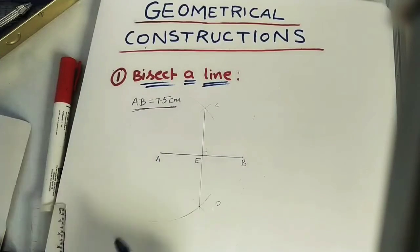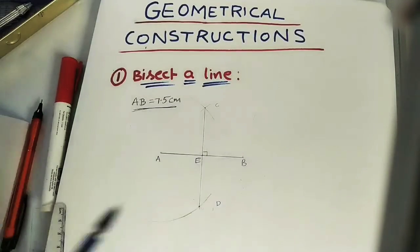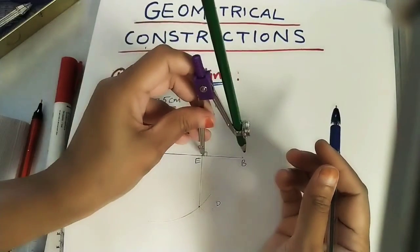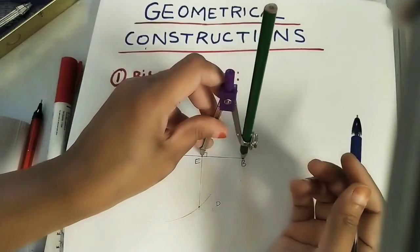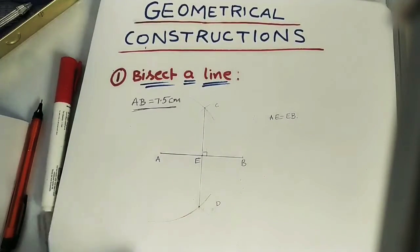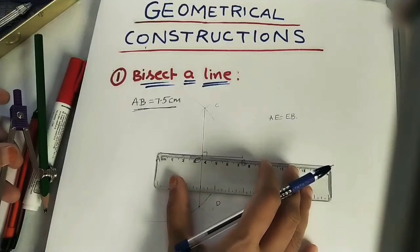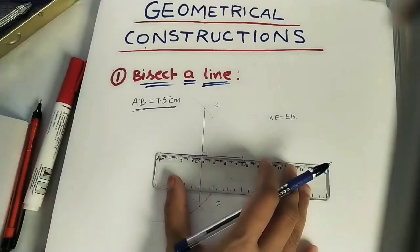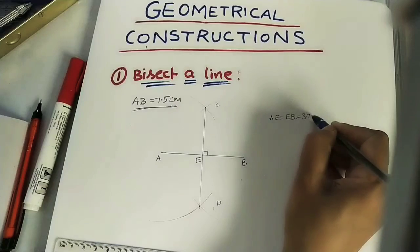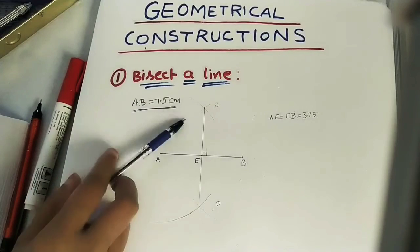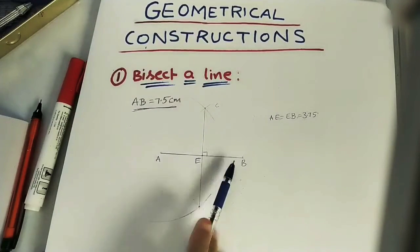The intersection point is marked as E. Measure the AE length and the EB length — we are dividing the line into two equal halves. AE is equal to EB. Checking with the compass, each measures 3.75 centimeters. So 3.75 plus 3.75 gives us 7.5. This is the method of bisecting a given line into two equal halves.